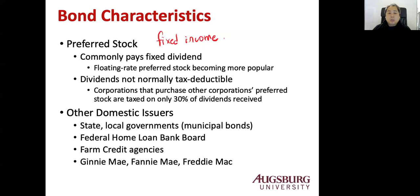Based on the issuer, there are other domestic issuers. There are usually state and local governments — we call these municipal securities or municipal bonds, often called munis. Other issuers like the Federal Home Loan Bank Board, Farm Credit Agency, GNMA, and FNMA are federal government agencies that guarantee the payment of these bonds. These bonds usually involve mortgage-related securities.